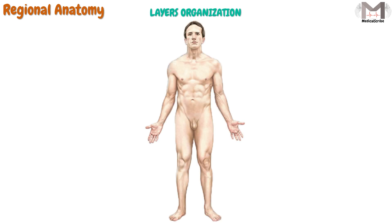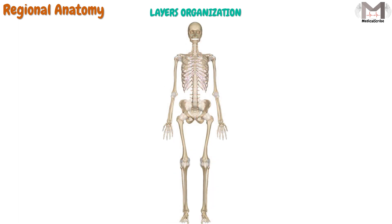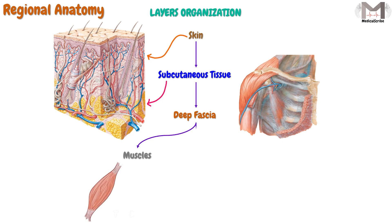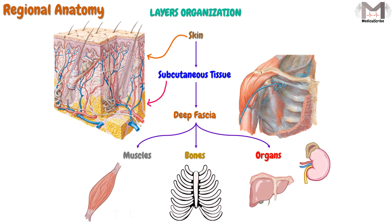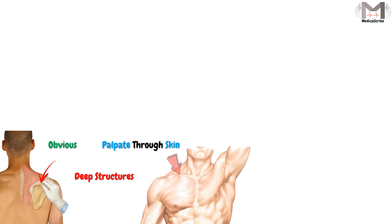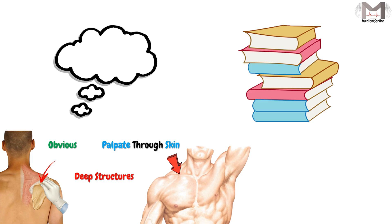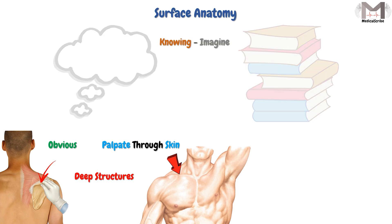Regional anatomy means we begin from the superficial structures and descend down to the deep structures — beginning by the skin, descending down to the subcutaneous tissue, then to the deep fascia which envelops the muscles, bones, and internal organs. Some of these deep structures are obvious and we can palpate them through the skin, and we can also study and imagine what we will find under the skin by using surface anatomy.